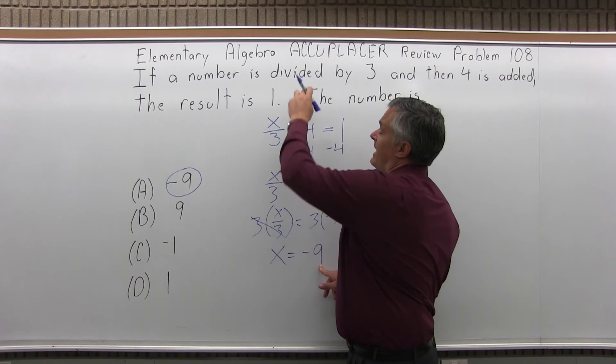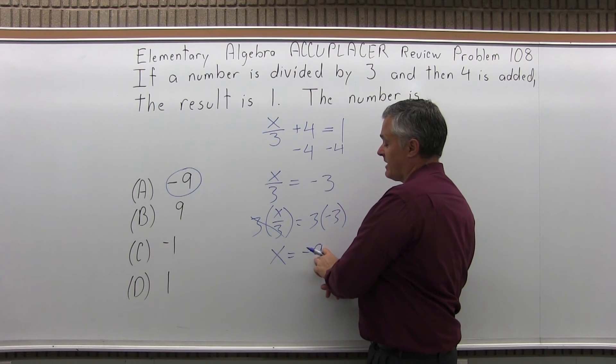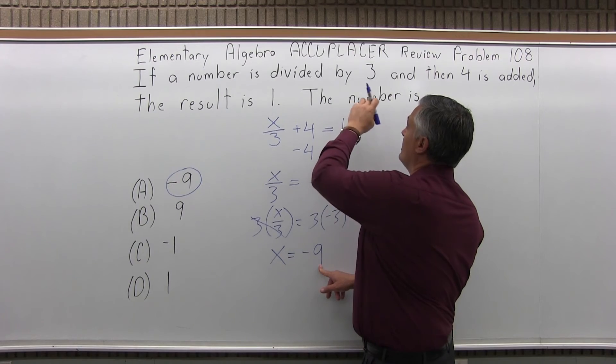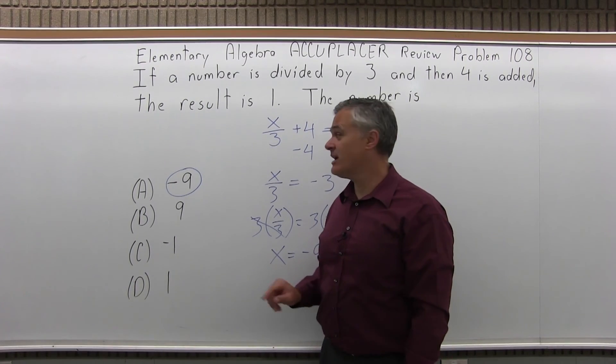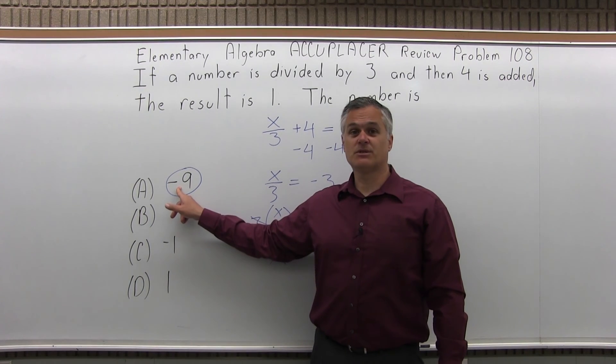If a number is divided by 3, so if negative 9 is divided by 3, it's minus 3. And then you add 4: minus 3 plus 4, the result is 1. So it does check out. The answer is option A.